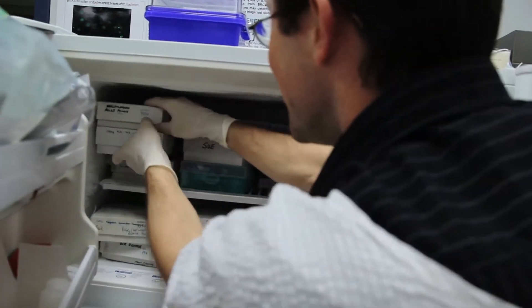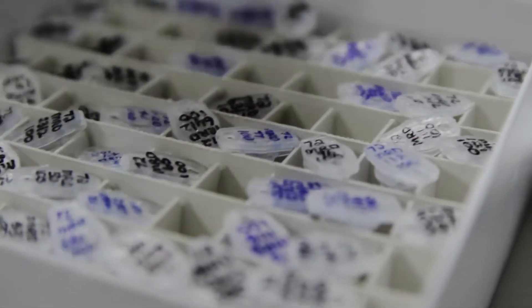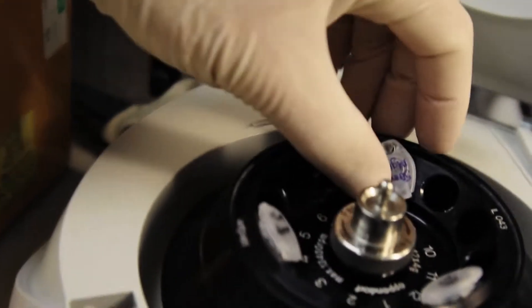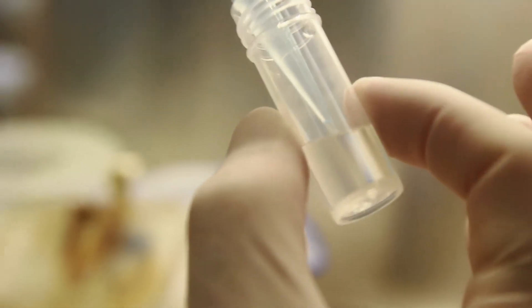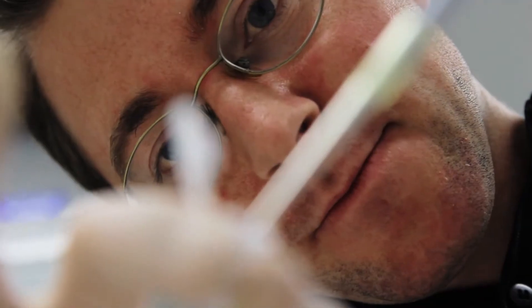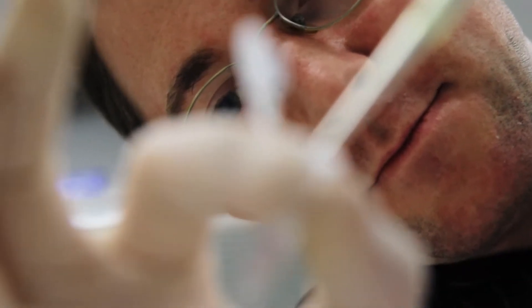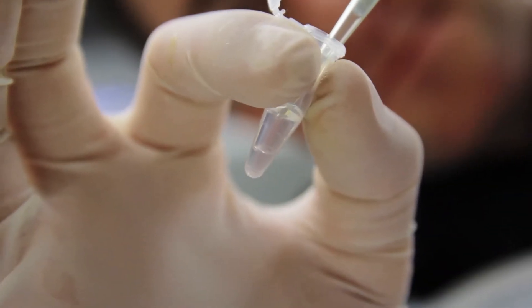The other strand was detecting immunoglobulin T cell receptor rearrangements by PCR. And so we took the quantification method from lymphocyte cloning, limiting dilution, and instead of cloning a cell in a well of a microplate, we cloned a molecule in a tube of a PCR.